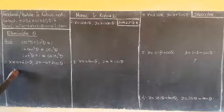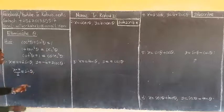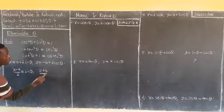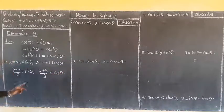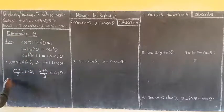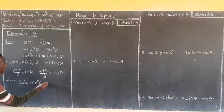When I take this side, it becomes x minus a, then I divide by 2, giving sin theta. Then from here, when I take this side, I have y plus d, then divide by 3, equaling cos theta. From here, I use the identity cos squared theta plus sin squared theta equals 1.